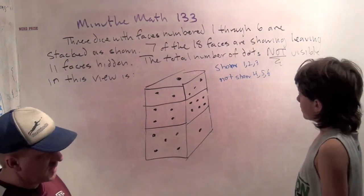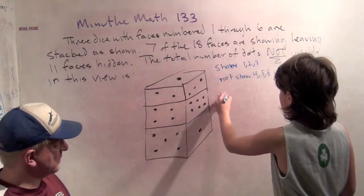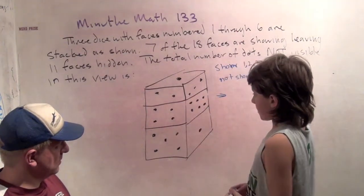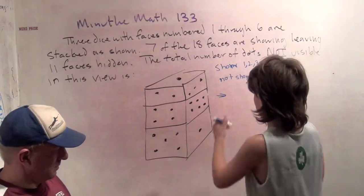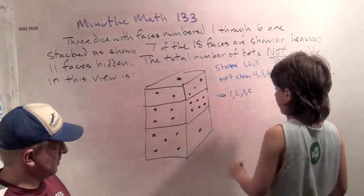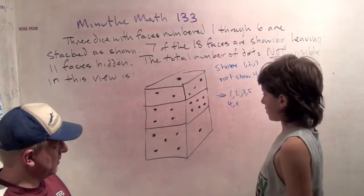This is also the number of dots. Well, sum of the number of dots at the end. For this one, 4 and 6 are showing, so 1, 2, 3, and 5 aren't showing.